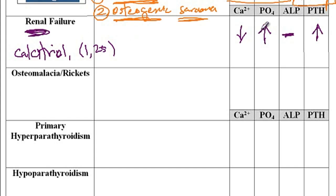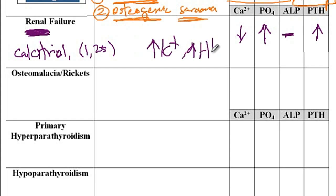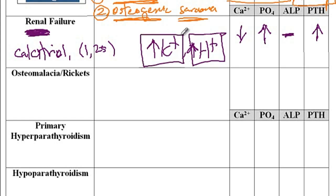Since the kidney has problems, phosphate, potassium, and acids can no longer be excreted. So there is an elevated level of potassium and elevated level of hydrogen ions. These patients will have metabolic acidosis as well as hyperkalemia, in addition to hypocalcemia and hyperphosphatemia.